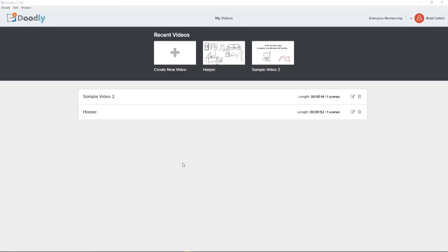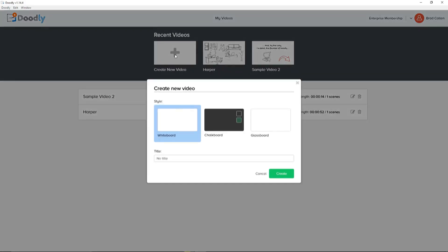All right, so we're here inside the Doodly app. And as you can see, it's super easy to use. It's also available for both Mac and PC. Now, let's go ahead and create our first video by clicking on the style we want. You can choose from either whiteboard, blackboard, greenboard, or even glassboard videos, giving you lots of control over the style of video that you can create. In this example, we'll create a nice looking whiteboard video.